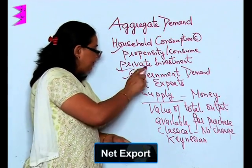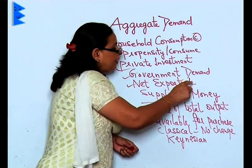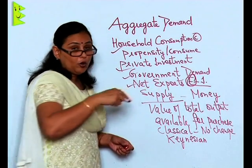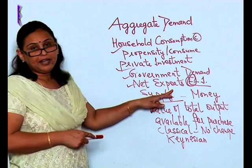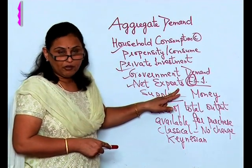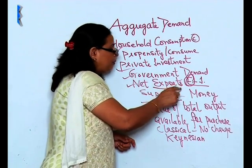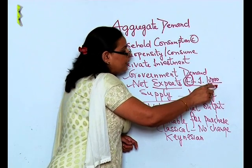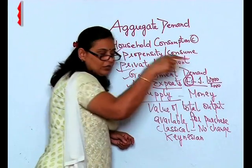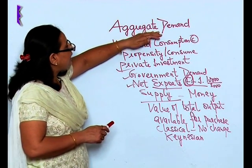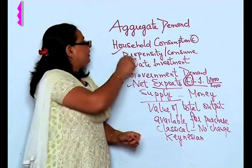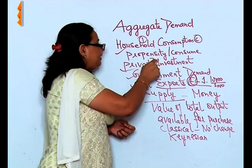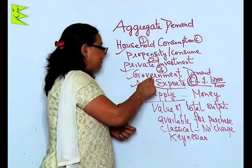The fourth component is net export — that is, exports minus imports. How much we have exported, meaning the requirement of other countries for our goods, minus what we have taken from other countries, is the net export of a country. For example, if I have exported 1000 tons of something but imported 300 tons, my net export will be 700 tons.